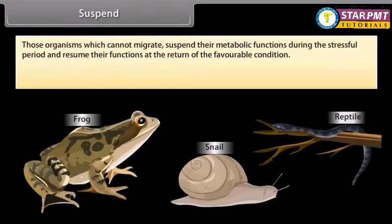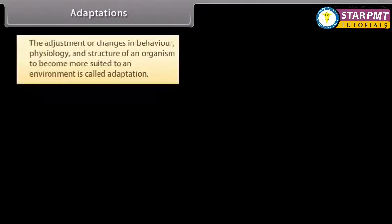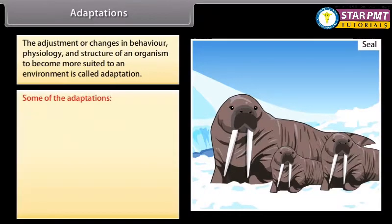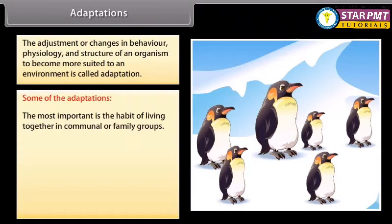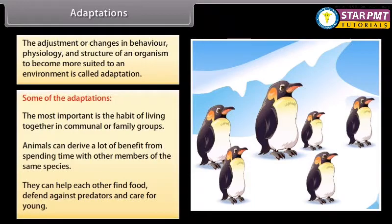Organisms which cannot migrate suspend their metabolic functions during the stressful period and resume their functions when favorable conditions return. Hibernation in frogs and certain reptiles and polar bears, and estivation in some snails and fish, are examples of suspension. Adaptation is the adjustment or changes in behavior, physiology, and structure of an organism to become more suited to an environment. One important adaptation is the habit of living together in communal or family groups — animals can help each other find food, defend against predators, and care for young. Several animal species including scorpion fish and leaf frogs can change their appearance to match their surroundings.